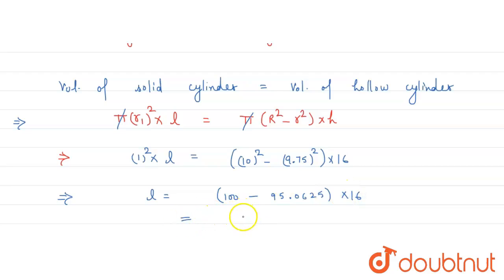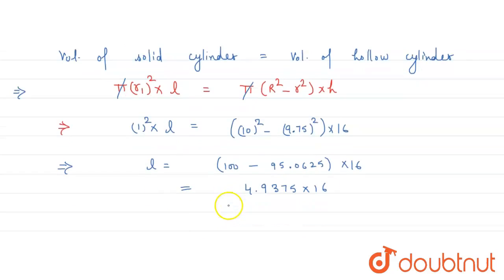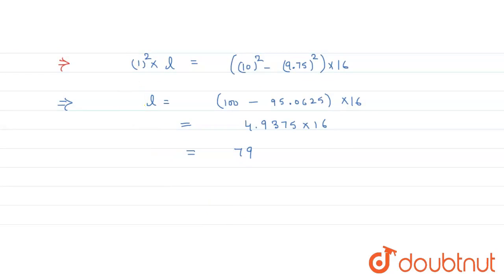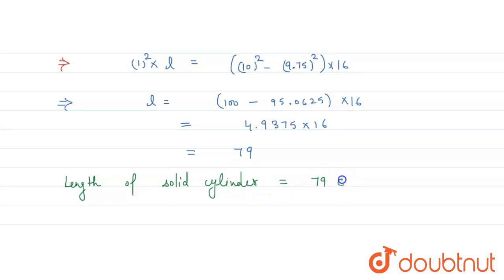Simplifying further: 4.9375 multiplied by 16. Multiplying these two numbers, we get L is equal to 79. So the length of the solid cylinder is 79 centimeters. This is the final answer. Thank you.